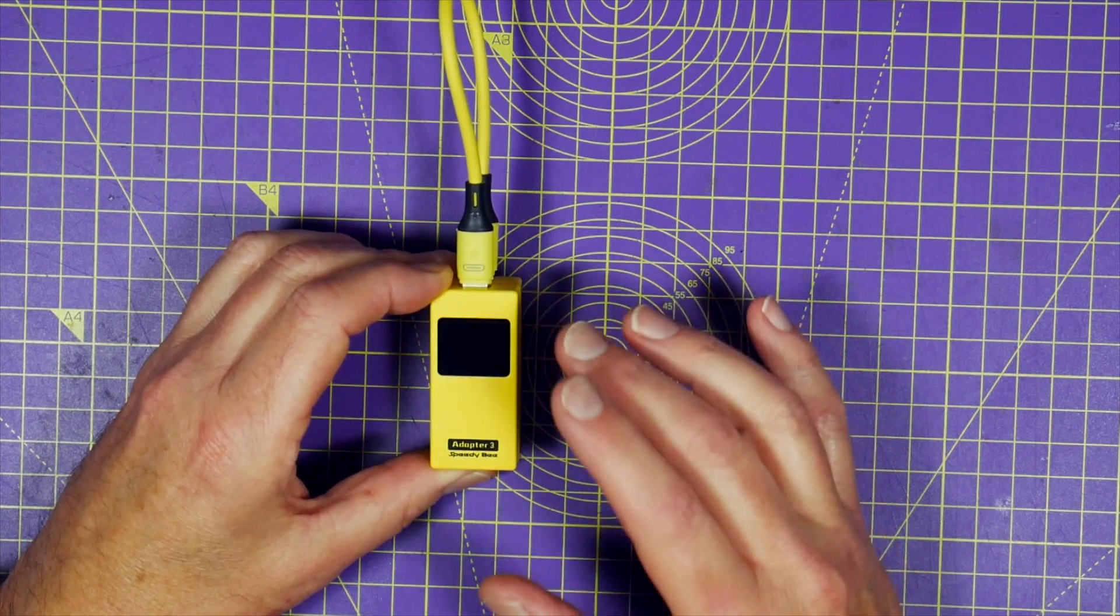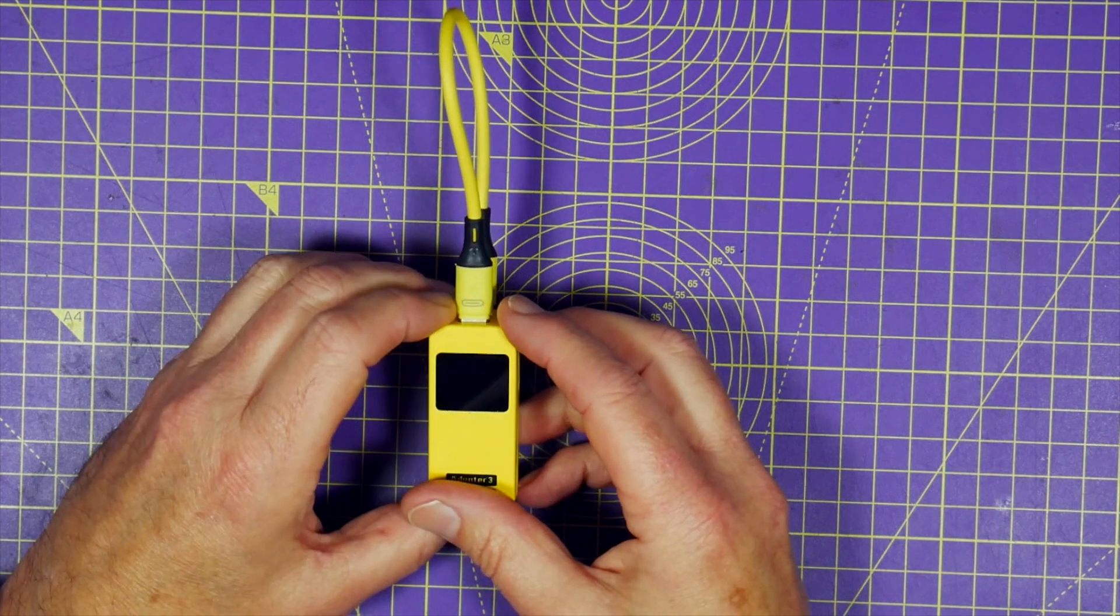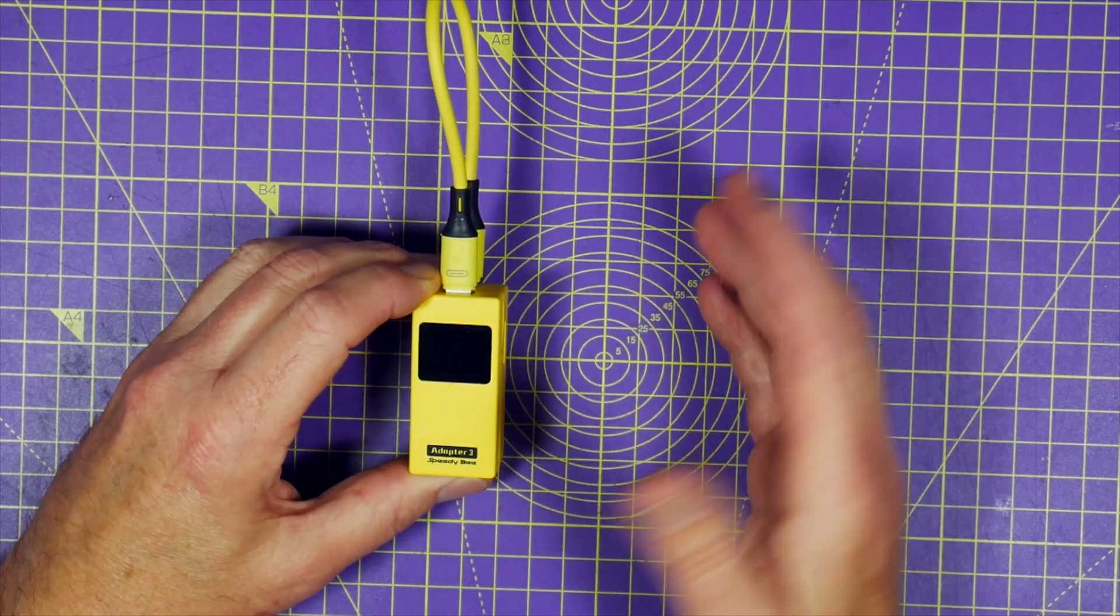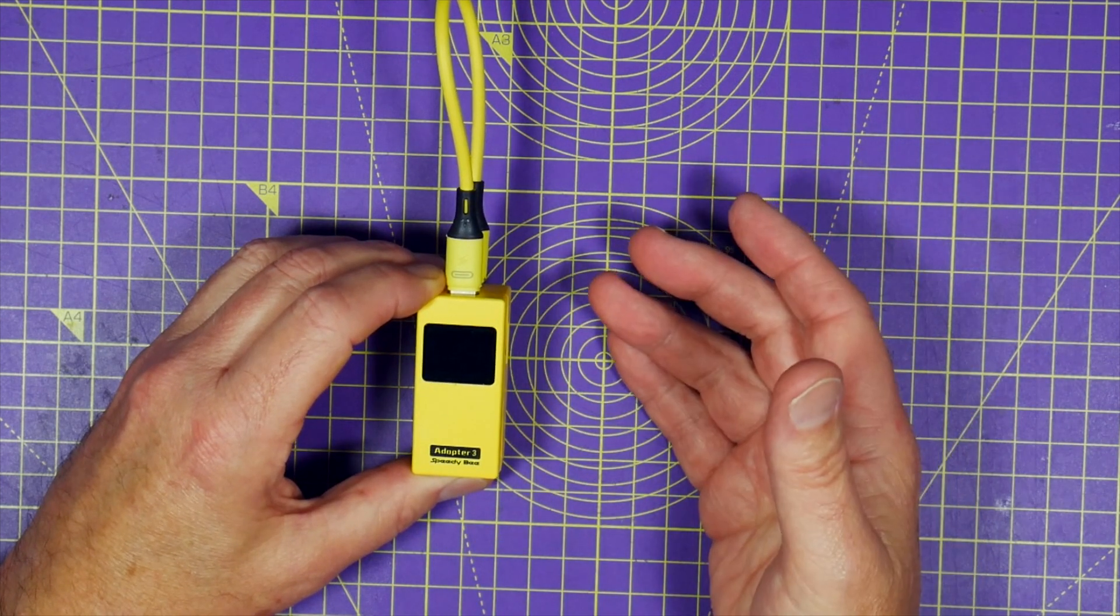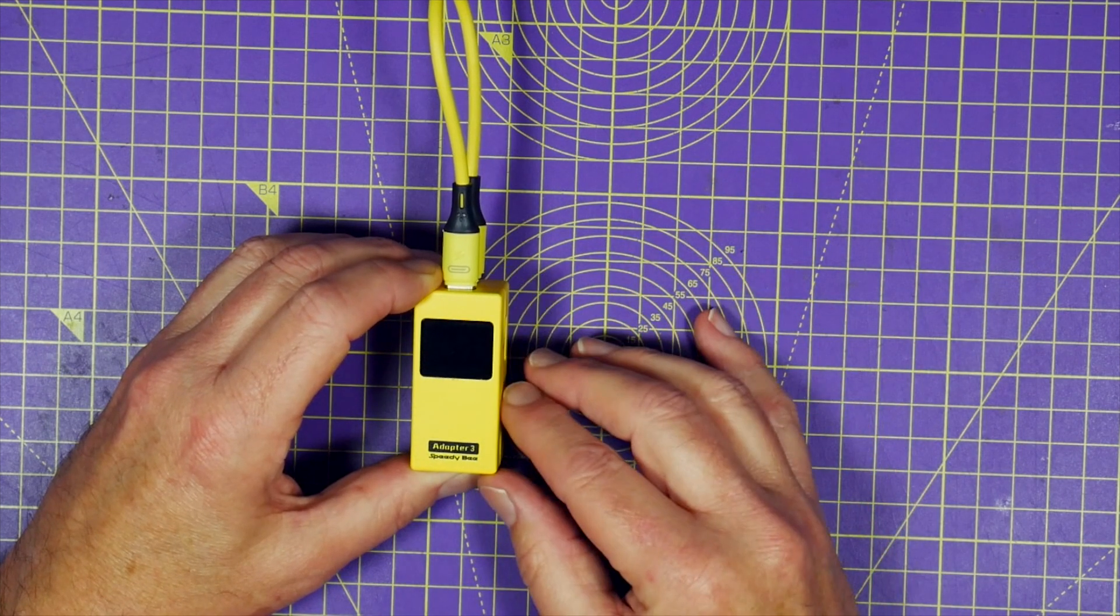SpeedyBee have just released this new version 3 of their SpeedyBee adapter. This incredibly useful little box means you don't need to take a laptop with you when you go out flying. You just need this and the SpeedyBee app to change the settings in Betaflight, iNav and EmuFlight.